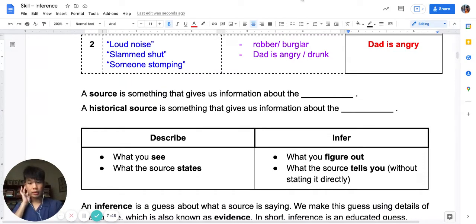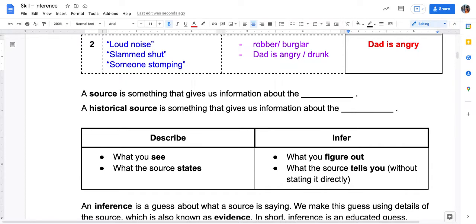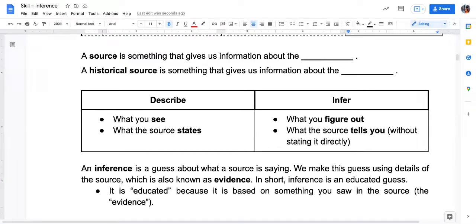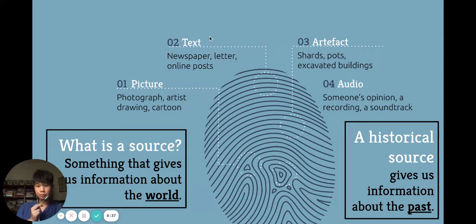So what is a source? These are examples of sources: pictures, texts, artifacts, audio sources. A source gives us information about the world. So what is a historical source? A historical source gives us information about the past. Please write it down on your worksheet. These are some examples of possible sources. Pause if you need to look at this slide and fill in the worksheet — the world and the past.